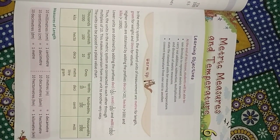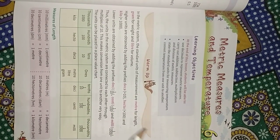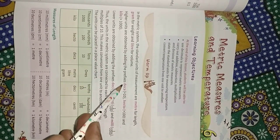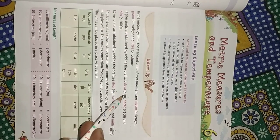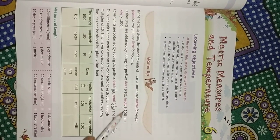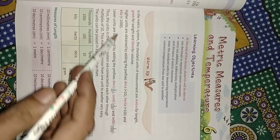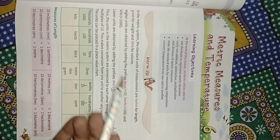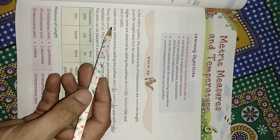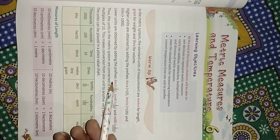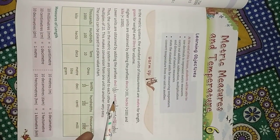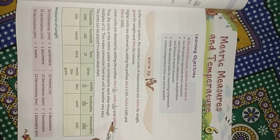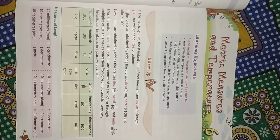We can obtain higher units by adding the prefix deka (10 times), hectare (100 times), and kilo (1000 times). Lower units are obtained by adding the prefix deci (1/10), centi (1/100), and milli (1/1000).